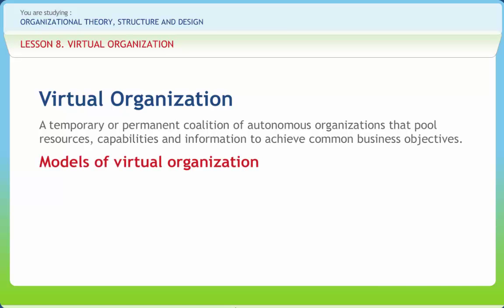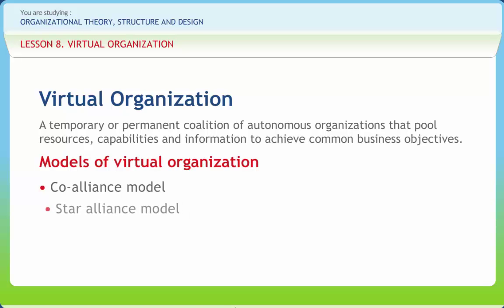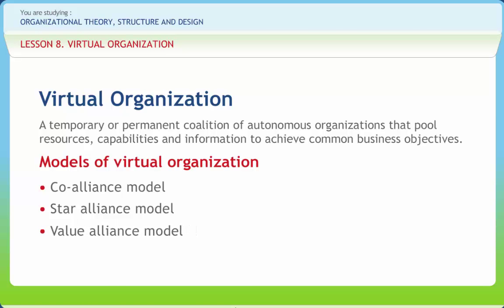Models of virtual organization are: the Co-Alliance Model, where several organizations come together to work on a project-by-project basis; the Star Alliance Model, which consists of a co-dominant organization and other satellite organizations or individuals; and the Value Alliance Model, where interrelated products, facilities and services of a supply chain are brought together.